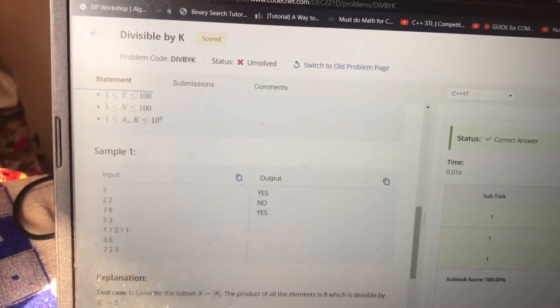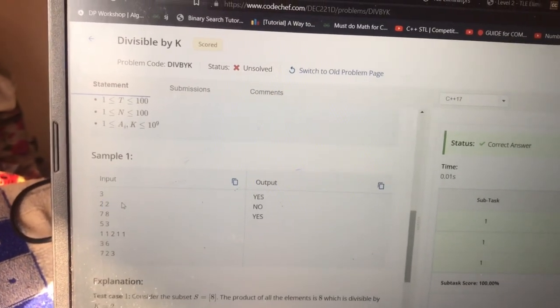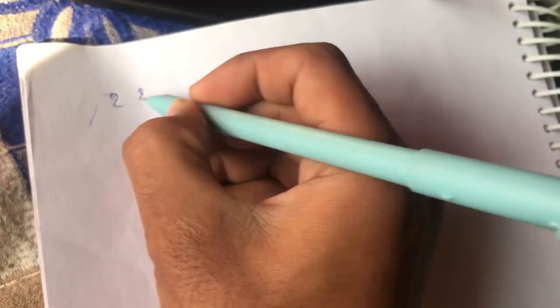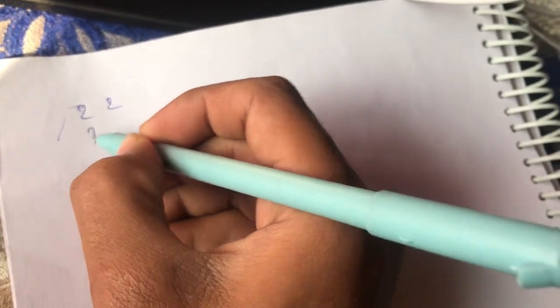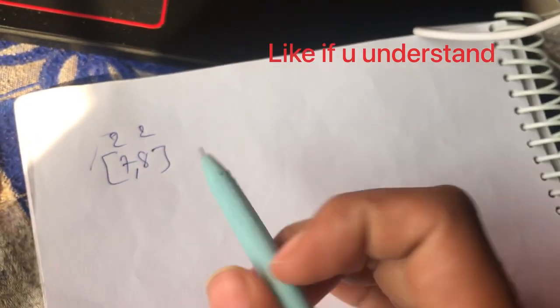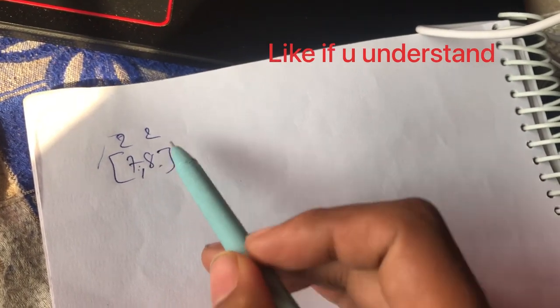So let me take the first test case and explain it to you guys. So the first test case is 2, 2, and the given array is [7, 8]. So 7, 8 is the array. Now it's basically saying check if any of the subsets of this array is divisible by this k. This is k, and this is actually the size of the array, let's suppose it is n.